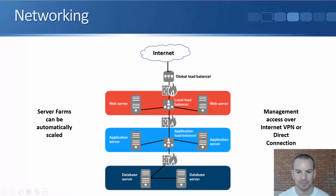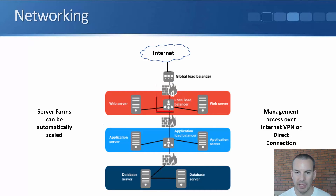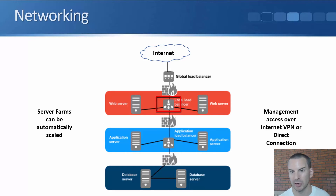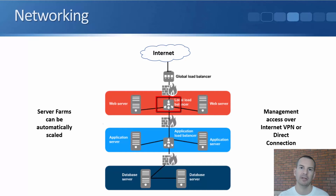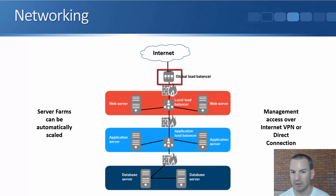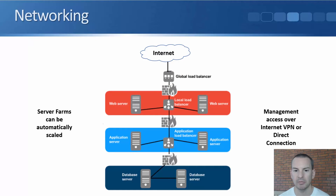I'm going to have a firewall in front of my web servers to make sure traffic can only come in as web traffic on port 80. I'm also going to have a load balancer because I'll have more connections coming in than one server can handle, and I don't want a single point of failure. So I'll have multiple web servers — all identical copies with the same content — in a server pool, with a load balancer in front of them to balance incoming connections across the server farm. I've also got a global load balancer on the outside, which I'll explain when we talk about disaster recovery later.